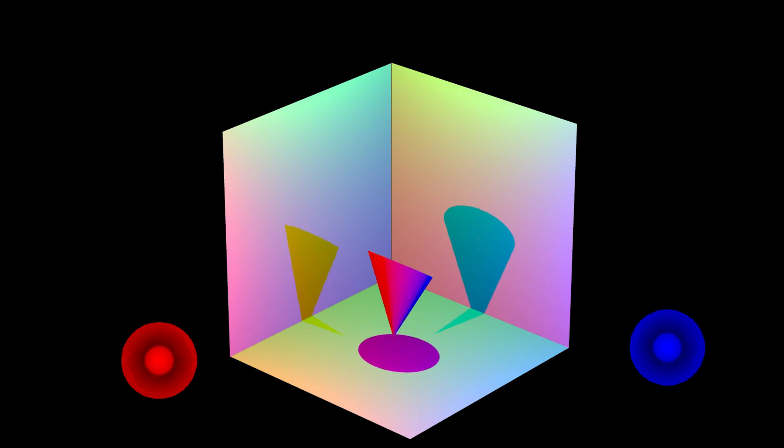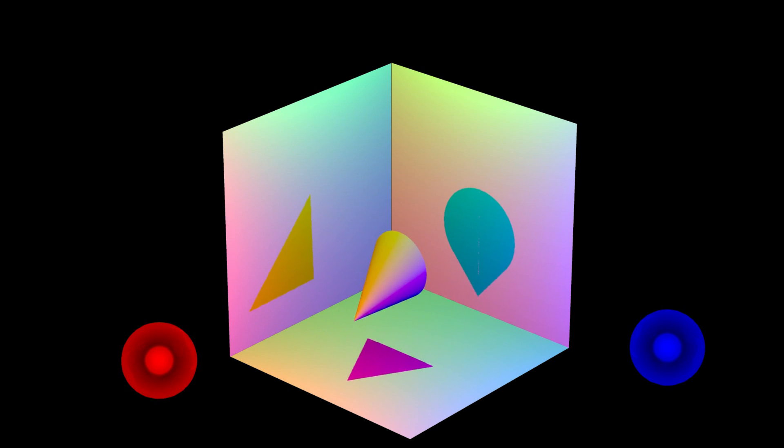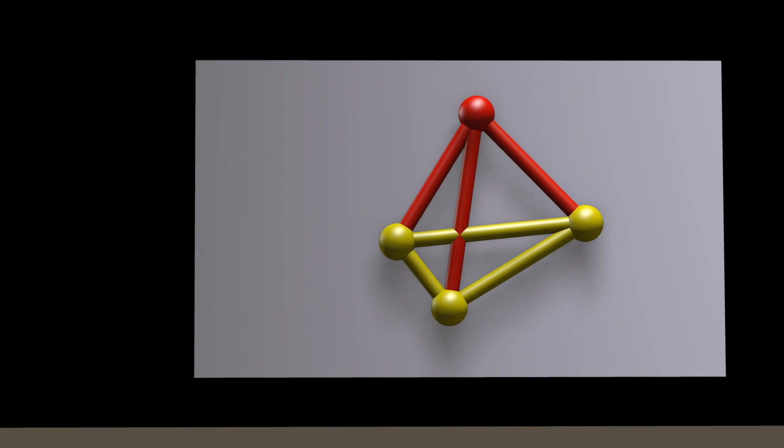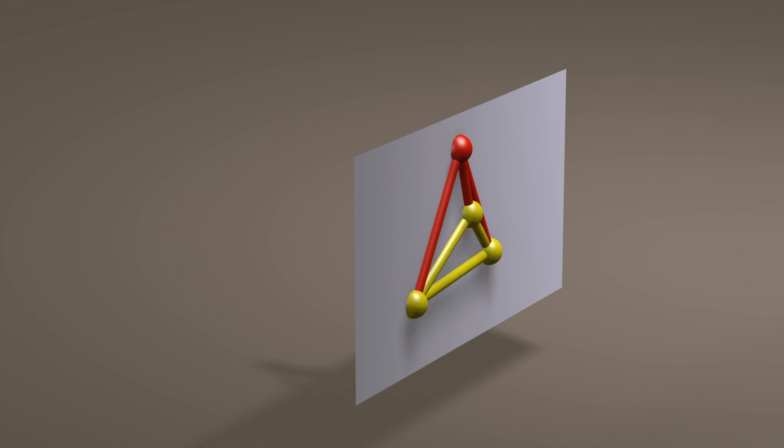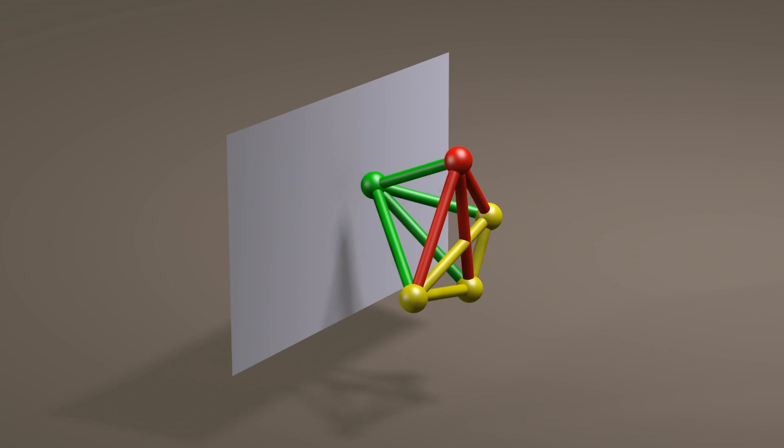A rotating four-dimensional object could similarly cast a three-dimensional shadow shape that changes with time.